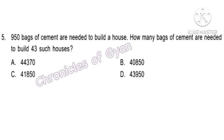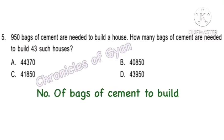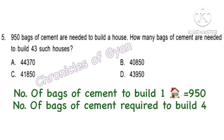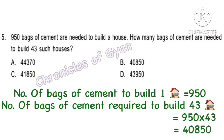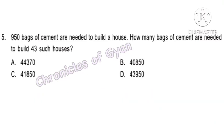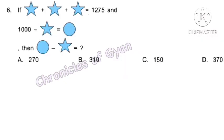Question 5. 950 bags of cement are needed to build a house. How many bags are needed to build 43 such houses? 950 bags into 43 houses comes up to option B — 40,850 bags.